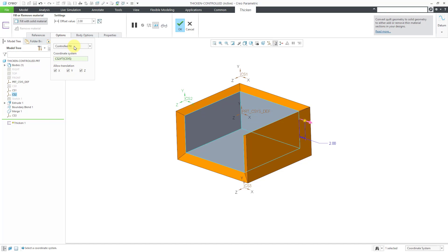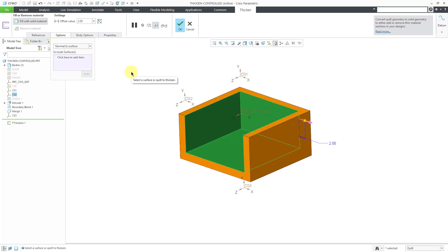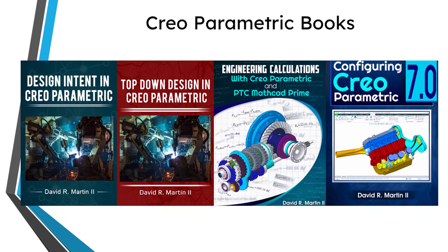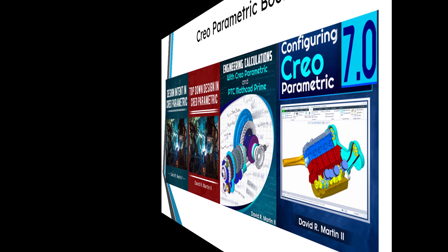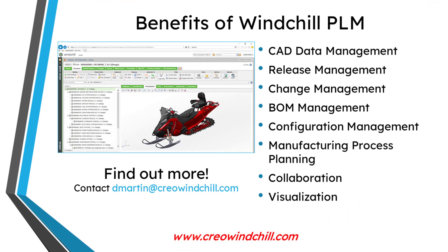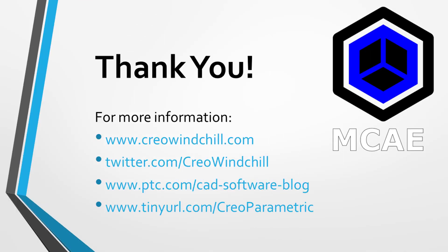That is how you can use the Thicken command in order to use a quilt to add or remove material from your model. I hope you enjoyed this video. For more information, please visit www.creowindchill.com. If you learned something from this video, please give it a thumbs up, and if you like this video, please click the subscribe button and ring the bell to be informed when new videos are uploaded.